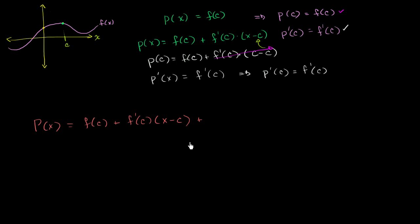So then you have plus your second degree term, f prime prime of c divided by 2 factorial times x minus c squared, plus the third derivative of the function evaluated at c over 3 factorial times x minus c to the third power. And I think you get the general idea. You can keep adding more and more and more terms like this.